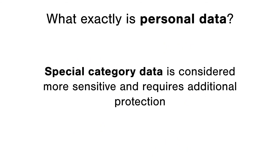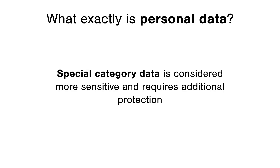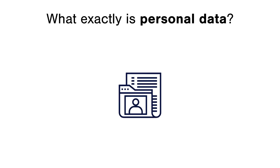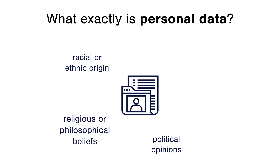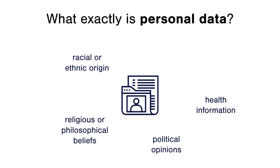There's also special category data, which is considered more sensitive and requires additional protection. This includes information about a person's racial or ethnic origin, political opinions, religious or philosophical beliefs, health information, or any data related to safeguarding matters. You should note that this list is not exhaustive.